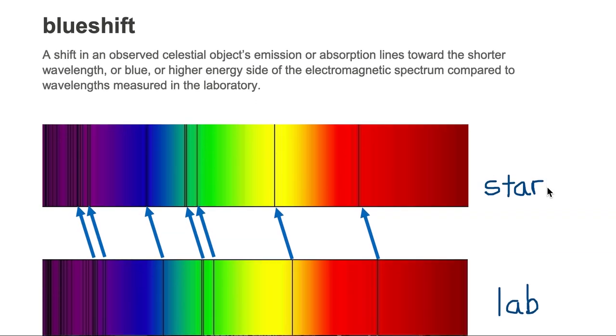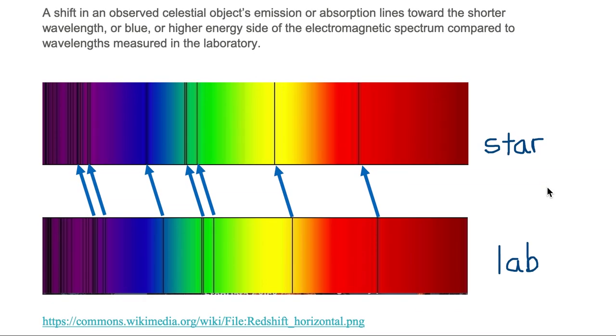So here we have an absorption spectra by a star, and we're looking in the visual wavelength band of the absorption spectra, and we're comparing that with the same wavelengths that are measured in the lab. And notice that all of the star's wavelengths are to the left of the ones that are in the lab.